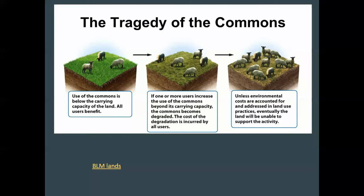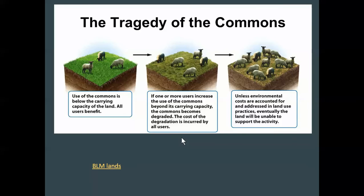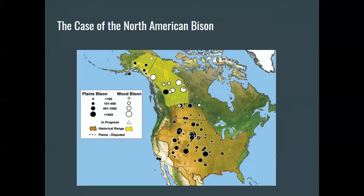Hardin saw this in public lands — BLM lands, Bureau of Land Management lands out west — and found that the more the land was not controlled, the more it was degraded. Public lands tend to decline because people degrade them for personal benefit. The benefit goes to the individual; the degradation is shared by everybody.